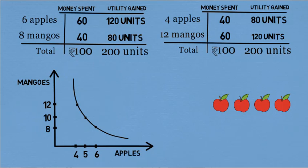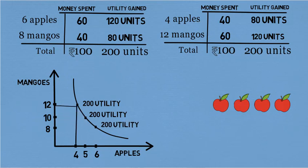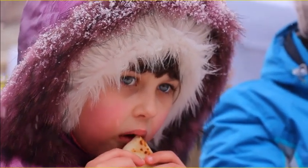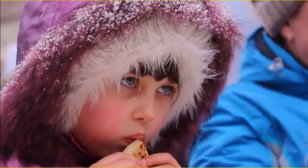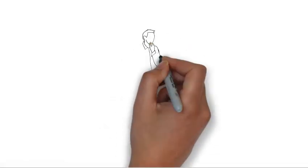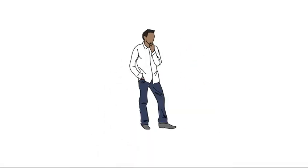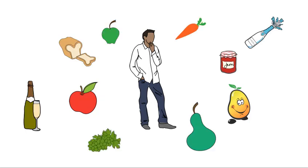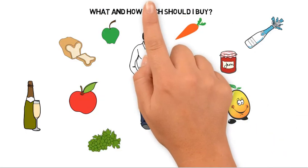An indifference curve is nothing but a locus of all points that keeps you on the same level of utility by letting you substitute between the two commodities. An indifference curve helps to understand consumer preferences. In general, it helps to study what actions a consumer might take so that he doesn't have to lose any utility that he derives from spending his money.